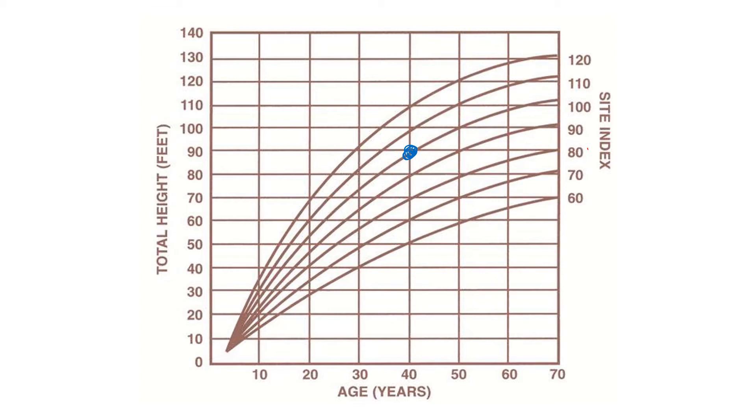So if it's 40 years old and 90 feet tall, you'd follow this curve up and figure out that the site index of that site would be 100, meaning when that tree is 50 years old, you'd expect it to be 100 feet tall.